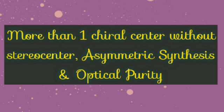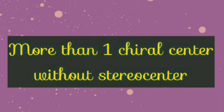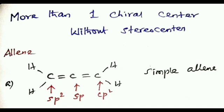Now we will discuss molecules with more than one chiral center. This is the simple allene structure. In an allene, the central carbon atom is SP hybridized and therefore it is linear. The other two outer carbon atoms are SP2 hybridized and trigonal planar.